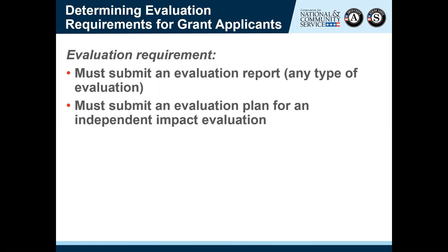Question: If a program wants to change their evaluation, is there a process for revising a previously approved evaluation plan, and is there a certain amount of change that requires new approval? Yes — if you have an approved plan and want to make changes, you can propose changes via the evaluation plans mailbox at evaluationplans@cns.gov. They go through the same review process as the original plan. If approved, you can switch to the revised plan; if not, you continue implementing your current approved plan.